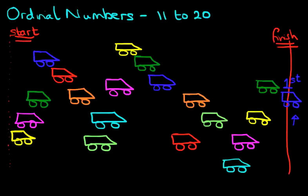Now we did the first to the tenth before, so you should know this. Now the next car, the green car, is in second place. That's in second place. The yellow car is in third place. And notice how we're writing down ST for first, ND for second, and RD for third.